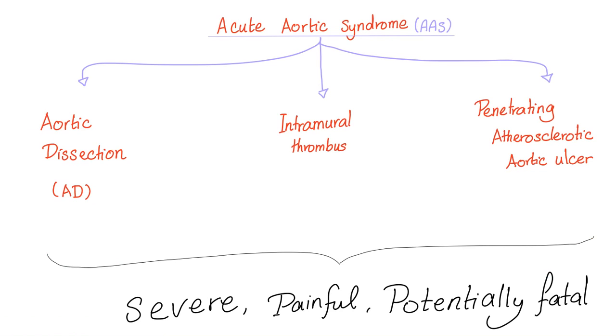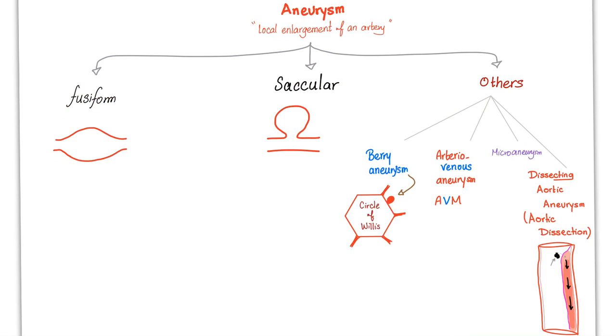In emergency medicine, there is a subject called acute aortic syndrome, and it's divided into aortic dissection, intramural thrombus, or penetrating atherosclerotic aortic ulcer.